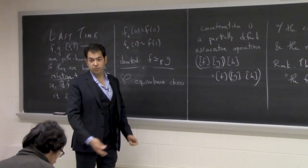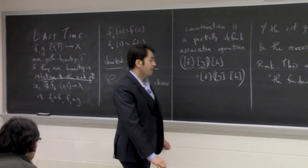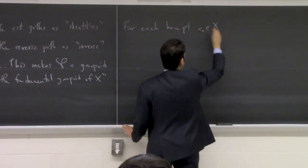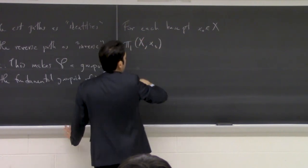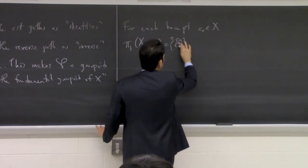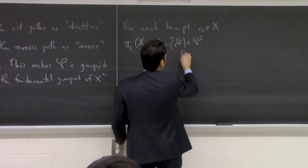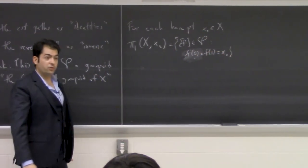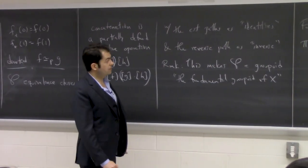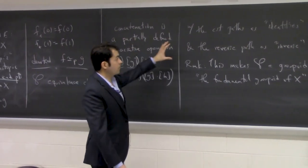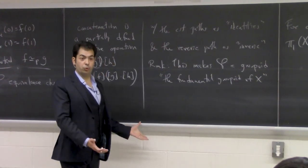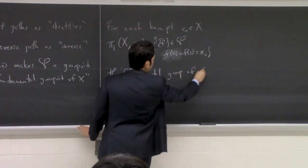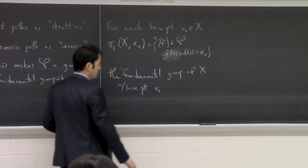Now since we prefer groups over groupoids — mostly because we're familiar with them and know what it means to compute a group — what we do is for each base point, we have π₁ of x, x₀, which is just the homotopy classes of paths whose endpoints are both equal to x₀. So these are homotopy classes of loops based at the point x₀. If you specialize these properties to having fixed beginning and end point, you see that you get a group. This is called the fundamental group of x with base point x₀.